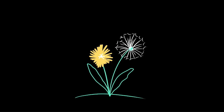From there, the seeds can grow into new dandelions, starting the whole cycle over. But why do dandelions do this? Why do they turn into puffballs? Why are they yellow? If they don't have brains, how do they seem to know when to release their seeds?